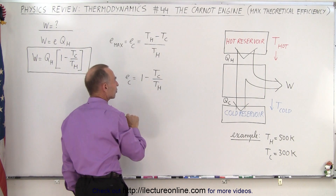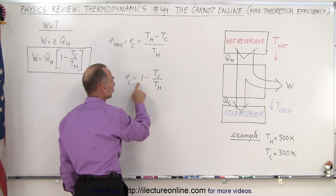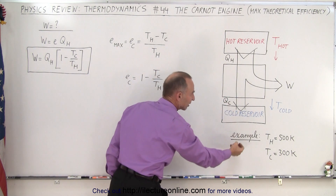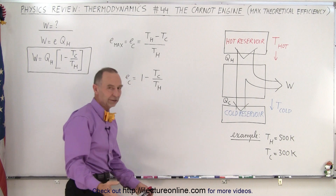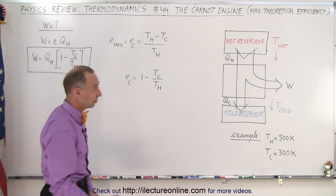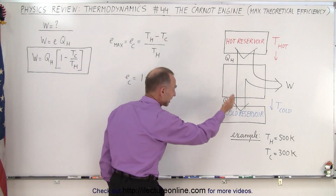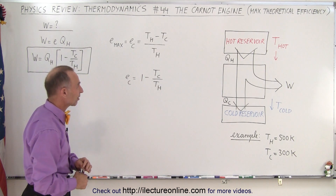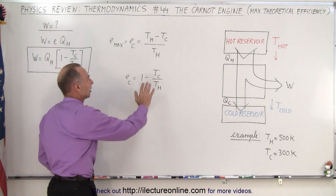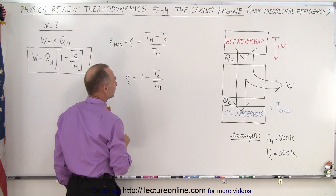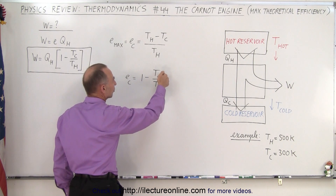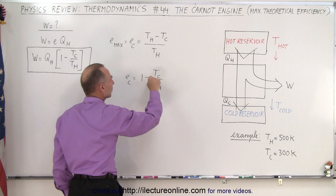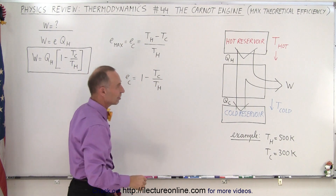Looking at this fraction, the efficiency would be one if T-Cold was zero. If the temperature of the exhaust gas were zero Kelvin, you'd have a hundred percent efficient engine — which of course is impossible. You can't get the exhaust temperature down to zero Kelvin, but if you could, the efficiency would be one hundred percent. You want T-Cold to be as small as possible so you subtract the smallest number from one.